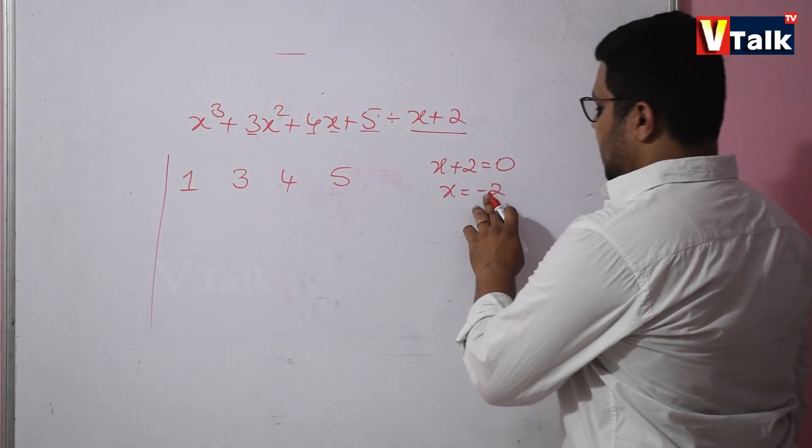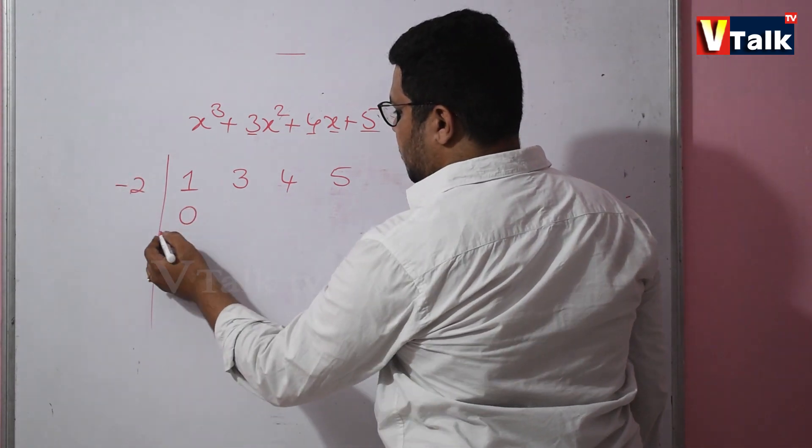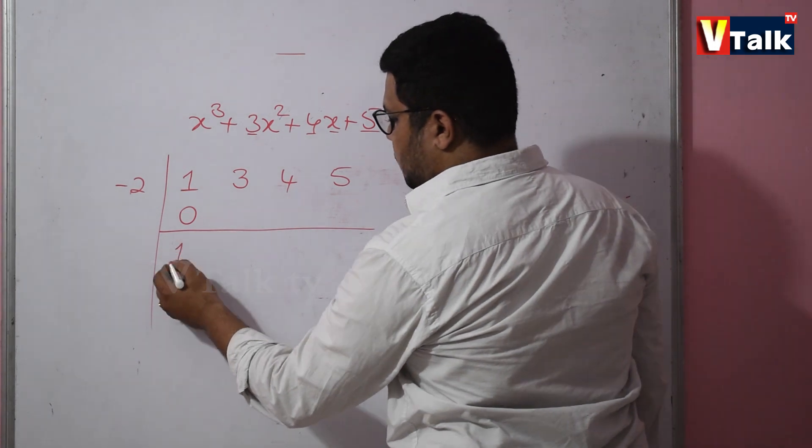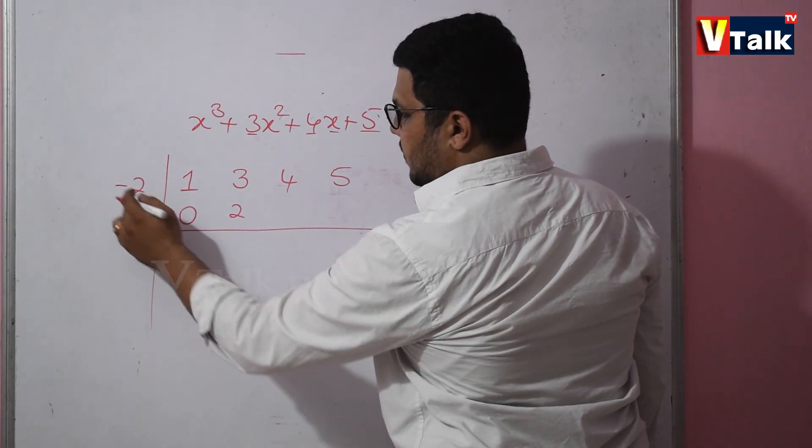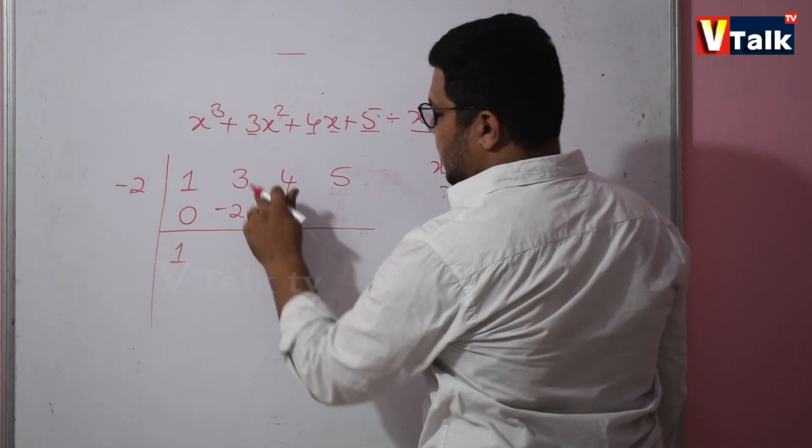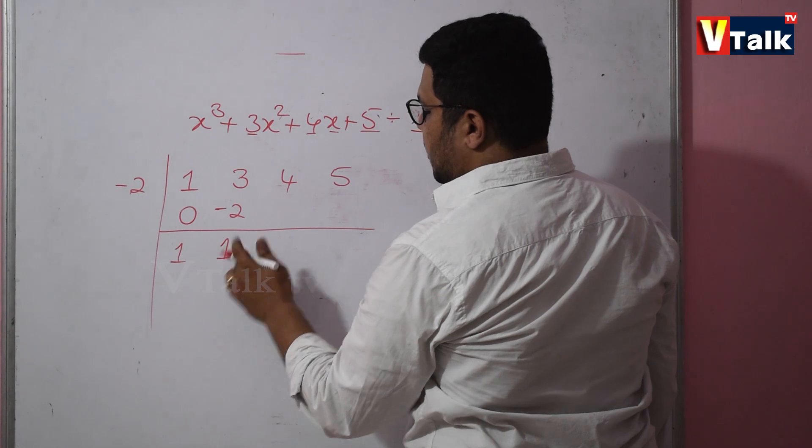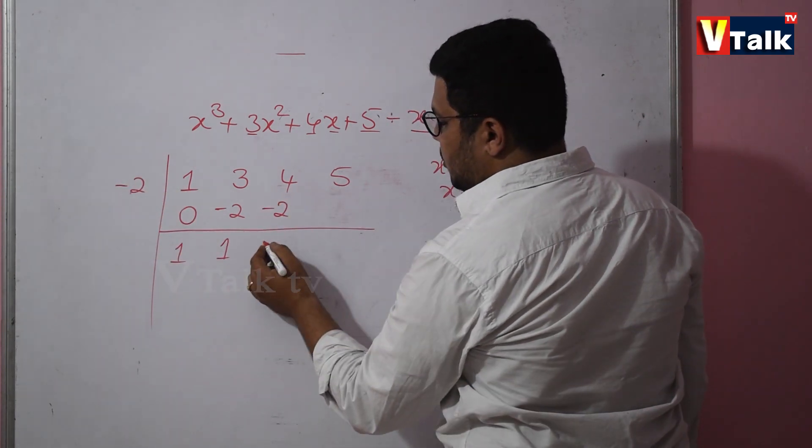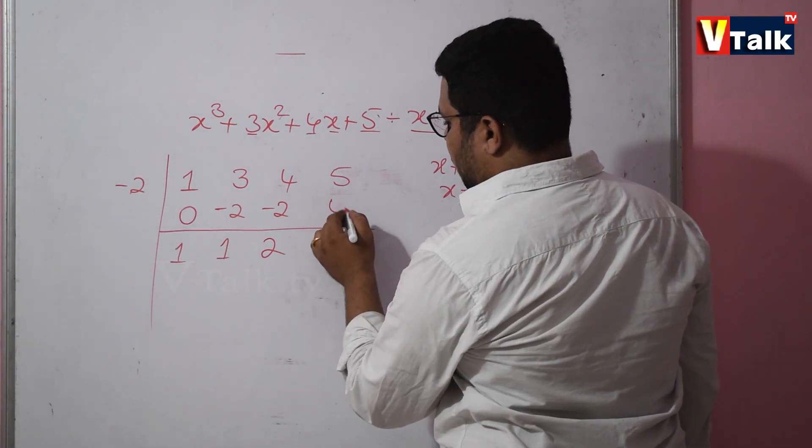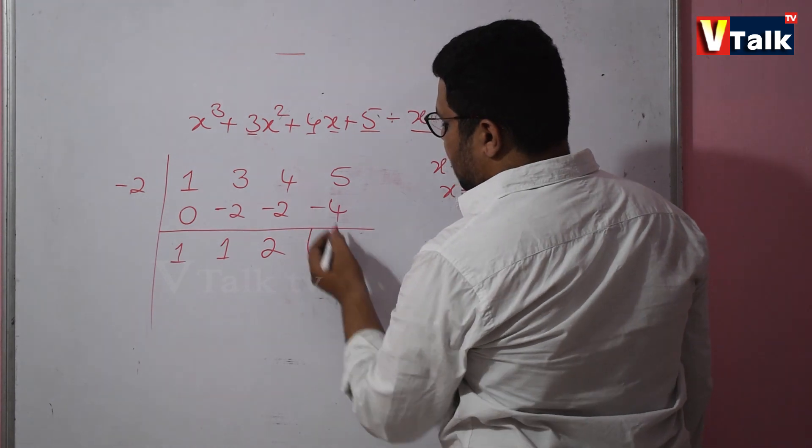Now minus 2. 1 into minus 2 is minus 2. 3 minus 2 is 1. 1 into minus 2 is minus 2. 4 minus 2 is 2. 2 times minus 2 is minus 4. Minus into plus is minus.